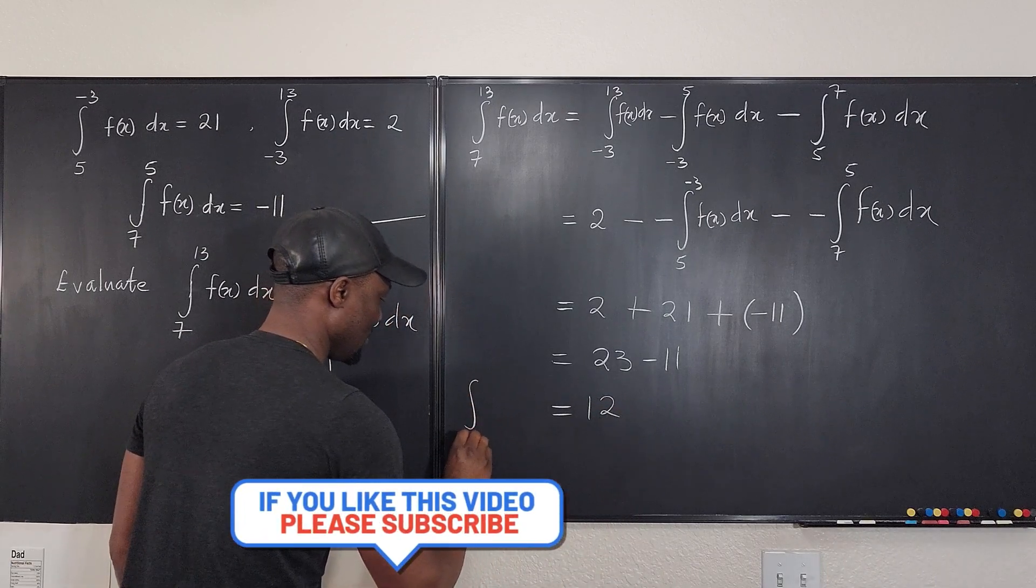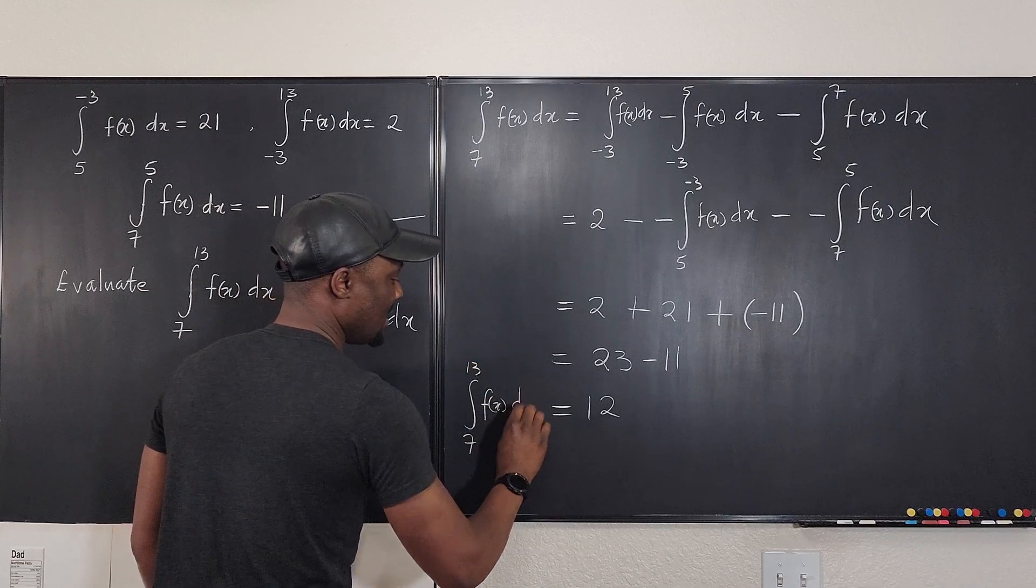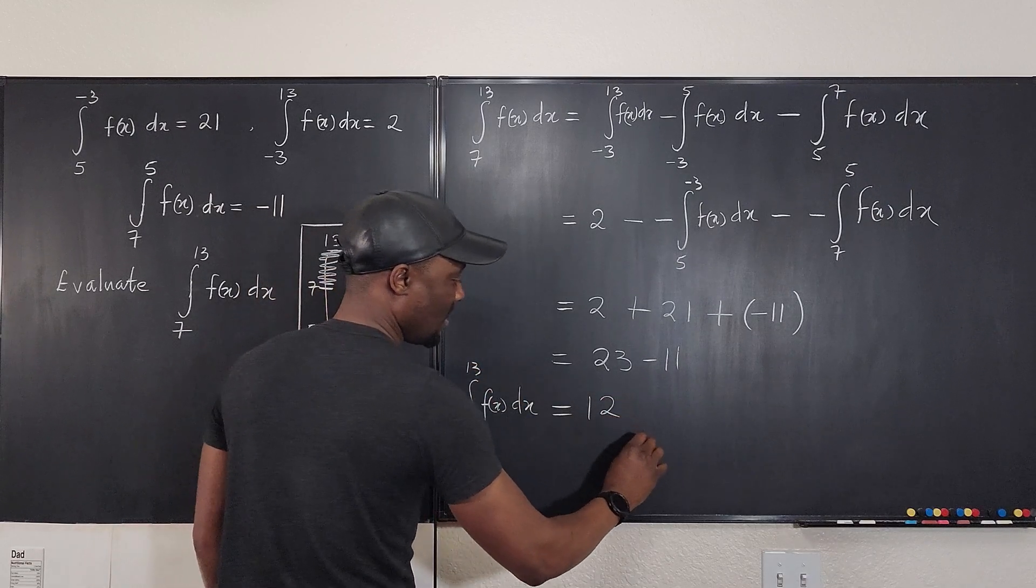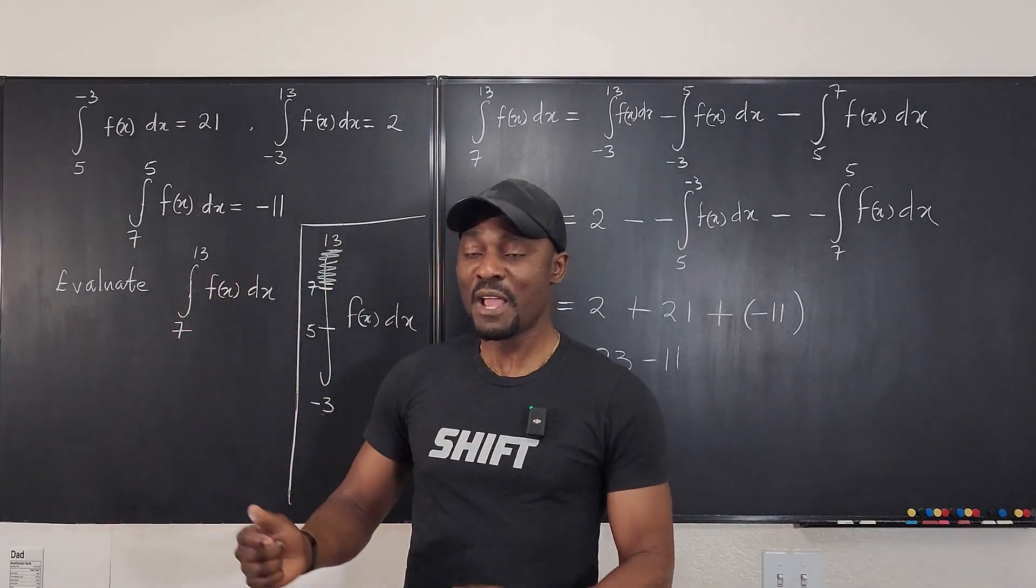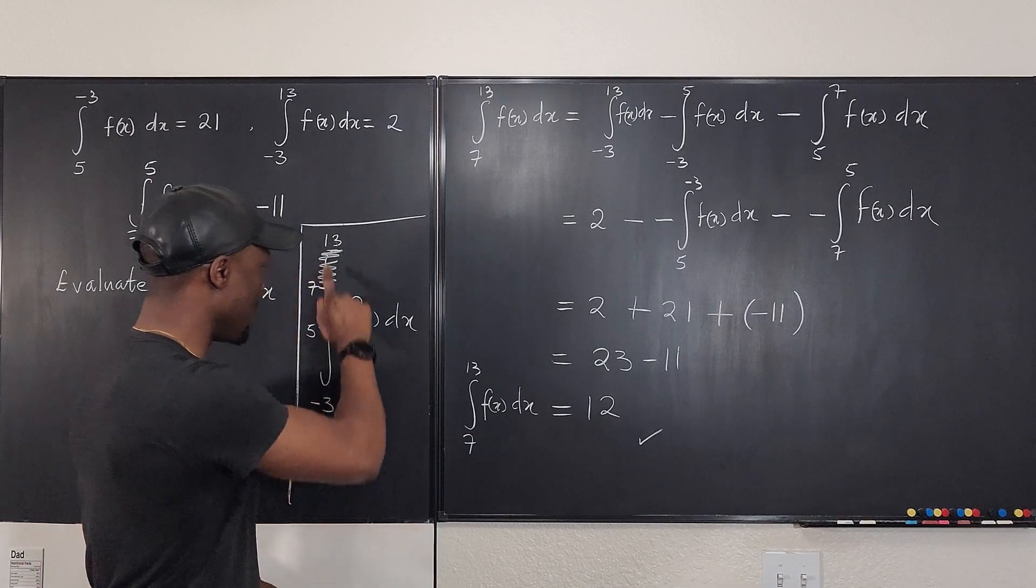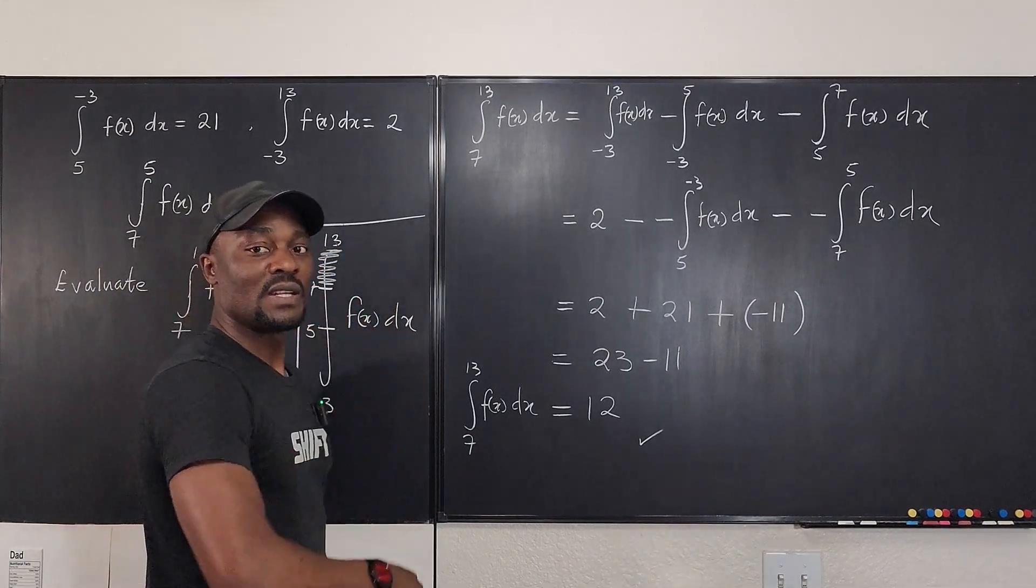So the integral from 7 to 13 of f(x) dx is equal to 12. And that's what you're looking for. So you see, this could be confusing. But make sure you make this giant one. And then you see the region you're looking for. And then use it to answer the question.